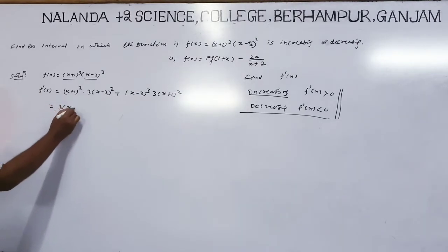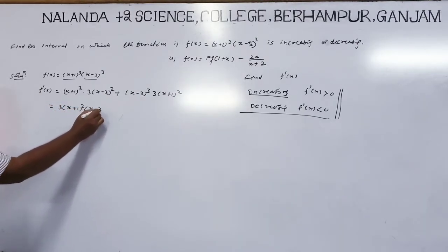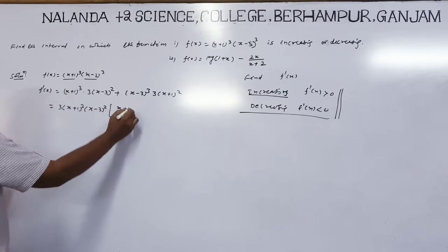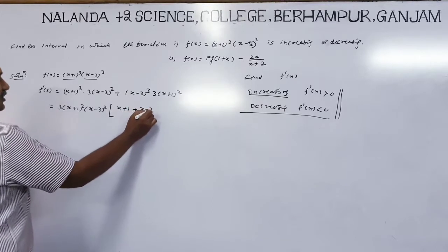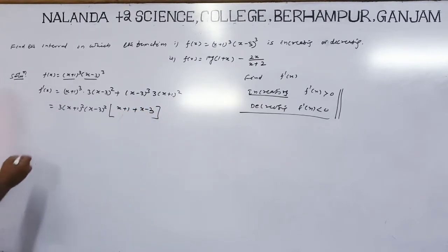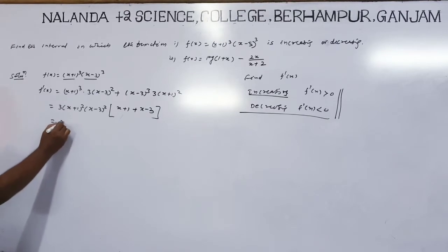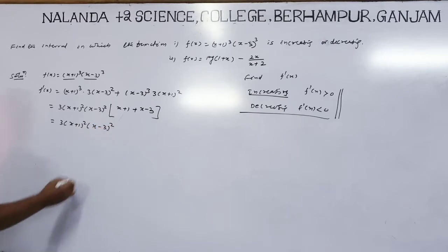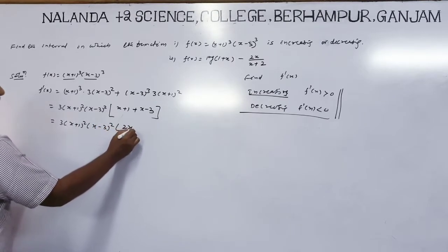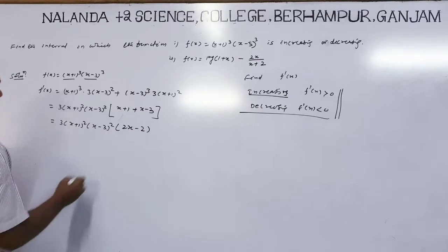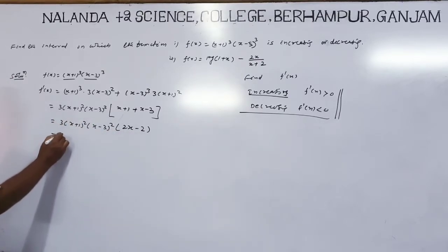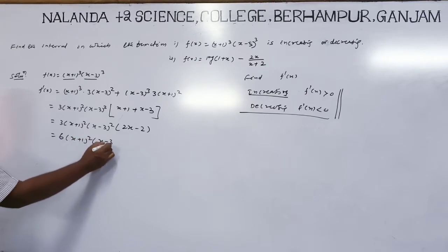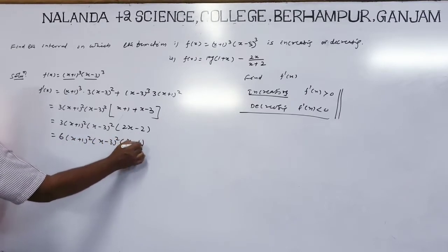Plus v times the derivative of u, which is 3(x+1)². Now take out common: 3(x+1)²(x-3)². Inside the bracket we get x+1 plus x-3, giving 2x-2. Taking out factor 2, f'(x) equals 6(x+1)²(x-3)²(x-1).